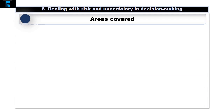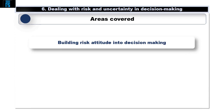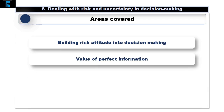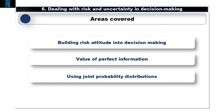In this video, we've considered how to build risk attitude into decision making, how much perfect information is worth to us, and how to use joint probability distributions to help us with decisions. All these techniques assume we know probabilities and values — often both are estimates at best.